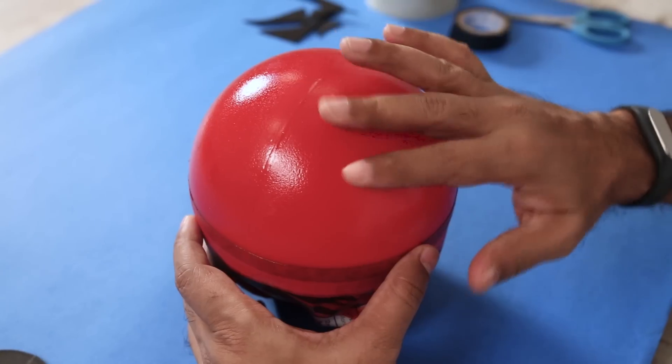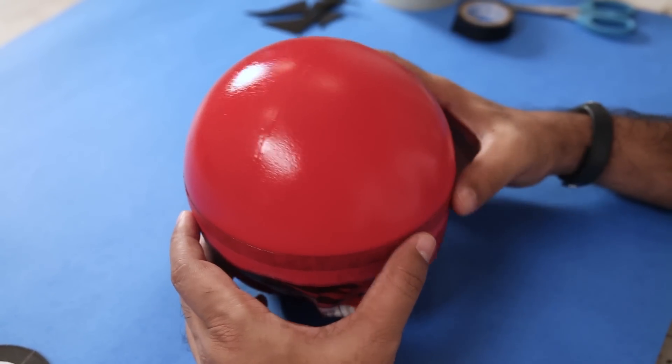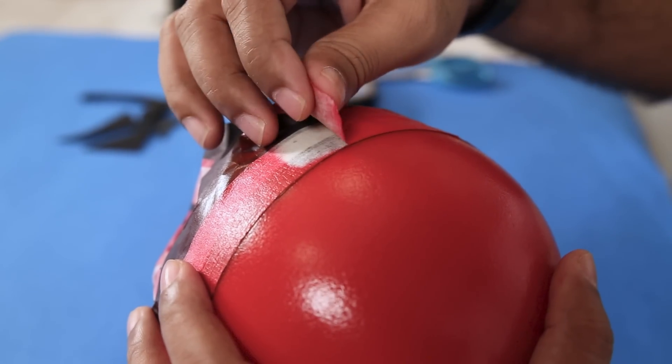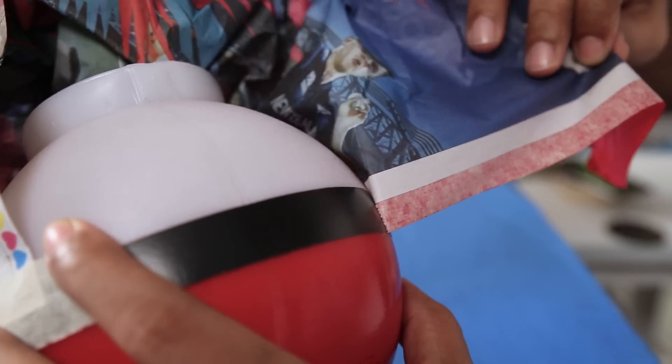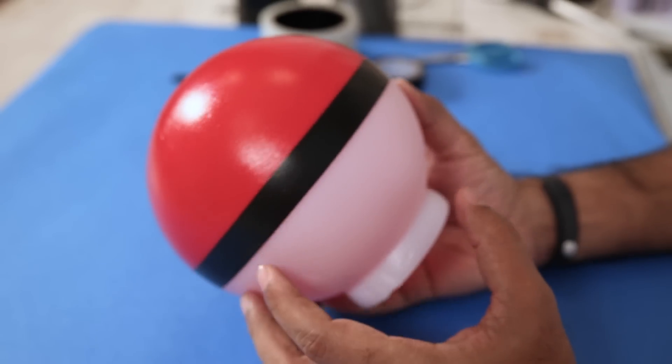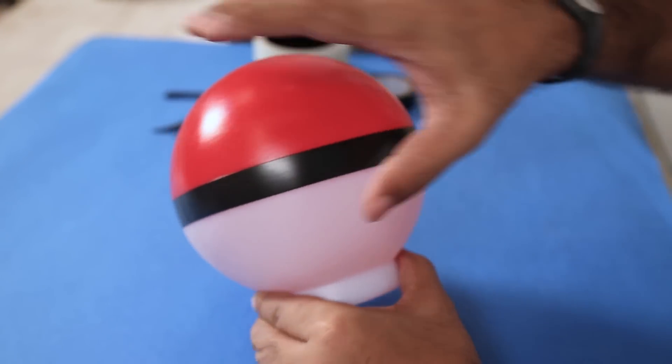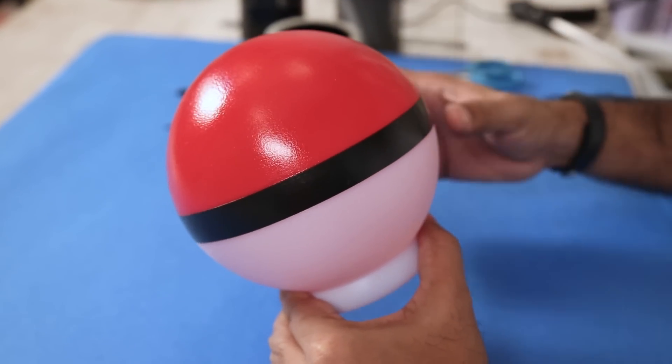And you can see it has dried up nicely. It has a nice shiny glossy finish. Looks great. Now I have to carefully take the tape out and remove this masking. And look at that. That looks fantastic. So we have the classic red and white pokeball colors. With a nice black band in the middle.